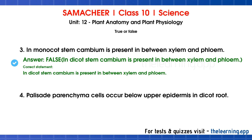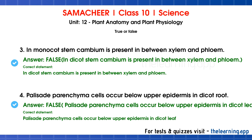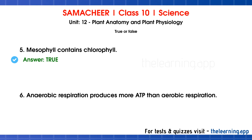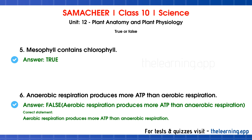Fourth question: Palisade parenchyma cells occur below the upper epidermis in dicot root — this is false; it is not in the root. Fifth question: Mesophyll contains chlorophyll — this is true. Mesophyll is a tissue layer between the lower and upper epidermis that contains chlorophyll. Sixth question: Anaerobic respiration produces more ATP than aerobic respiration — this is false. Aerobic respiration produces more ATP.